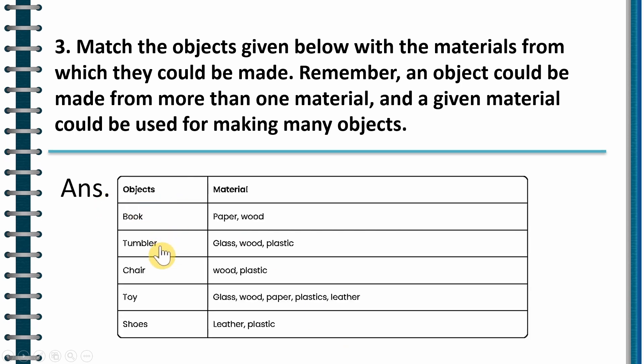The answer to this question is object book, the material can be paper or wood. Tumbler can be made out of glass, wood, plastic. Chair can be made out of wood or plastic. Then toy can be made out of glass, wood, paper, plastics or leather. Shoes can be made out of leather or plastic.